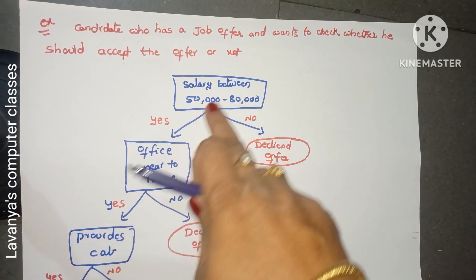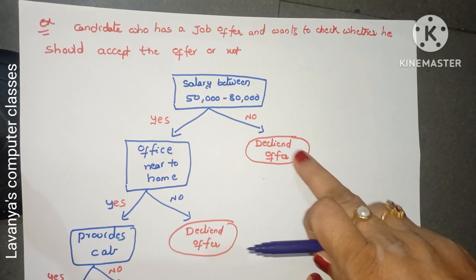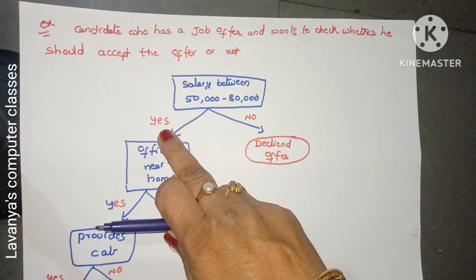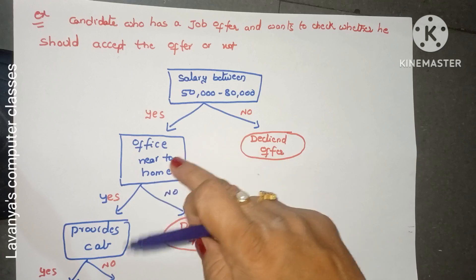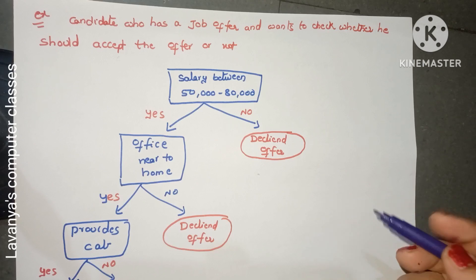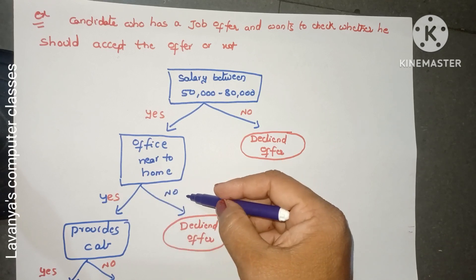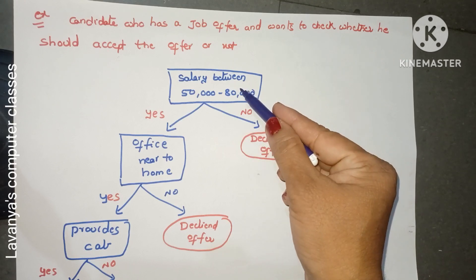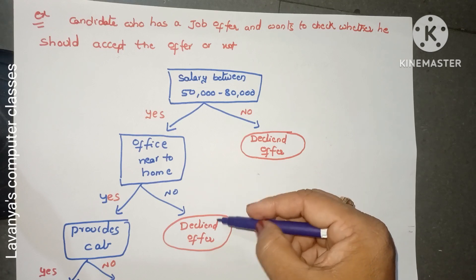If the salary is between $50,000 and $80,000, then yes — there is a choice to consider accepting the offer. A second question is asked: is the office near your home or not? If it is very far from your home, decline the offer — that is also a final output, a leaf node. If the salary is between $50,000 and $80,000 but the office is not near, then just decline the offer.